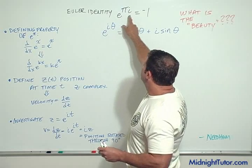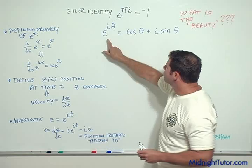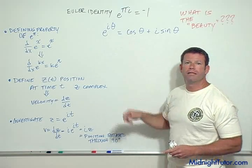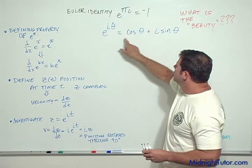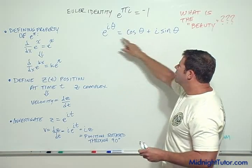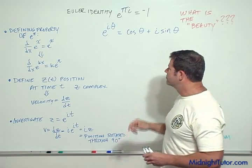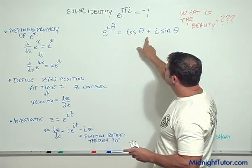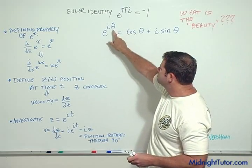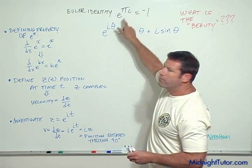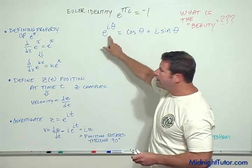So we have this identity: e to the pi i equals minus one. What's so beautiful about that? Well, it's related to the Euler equation: e to the i theta equals cosine theta plus i sine theta, where i is the square root of minus one, an imaginary variable. If you plug theta equals pi into here, you get that — that's where this came from. So let's investigate e to the i theta.